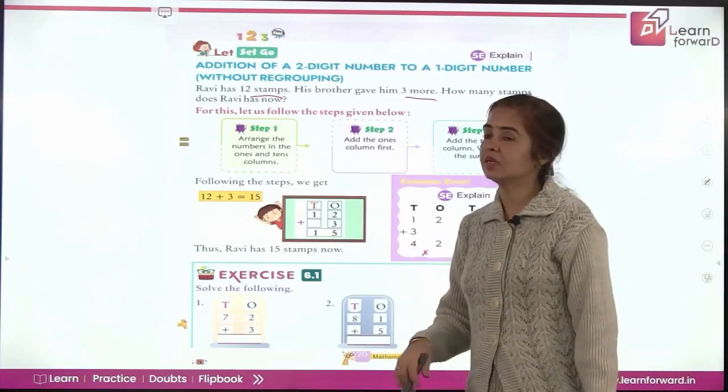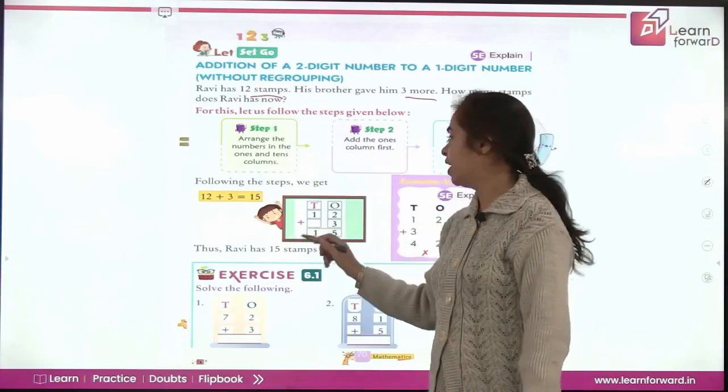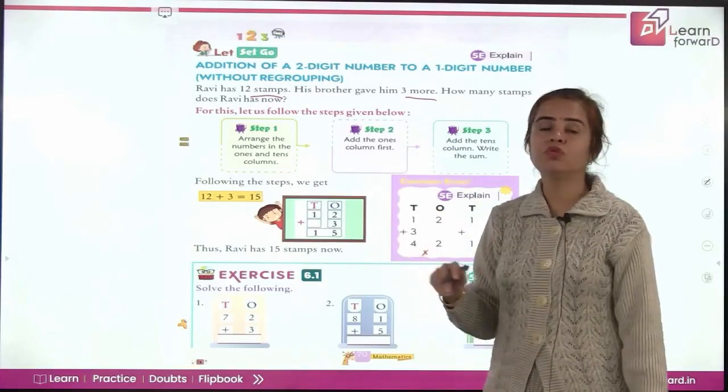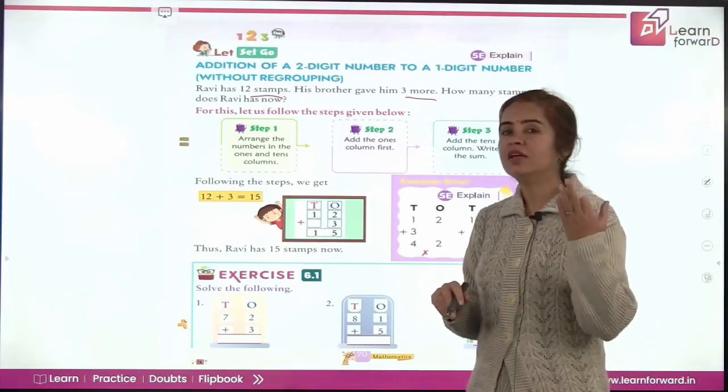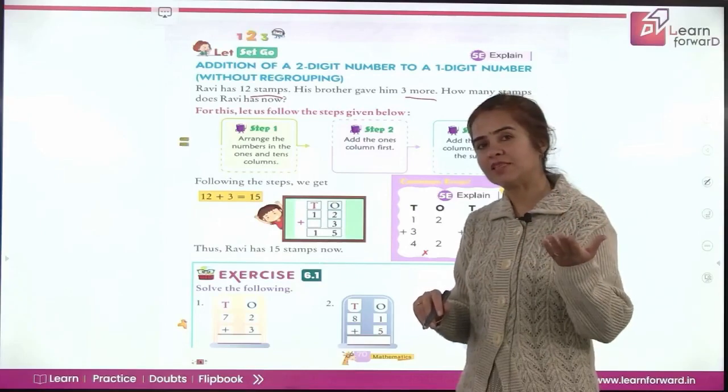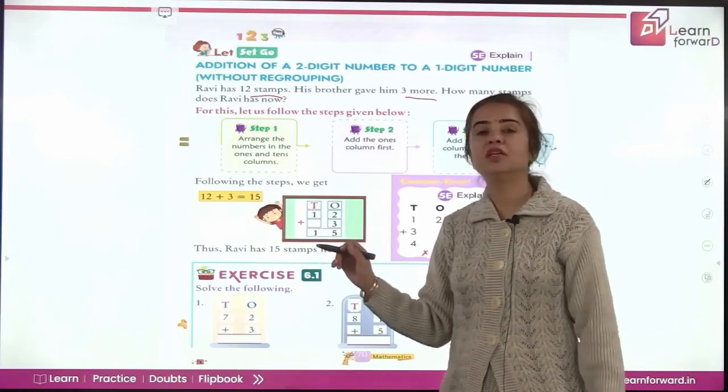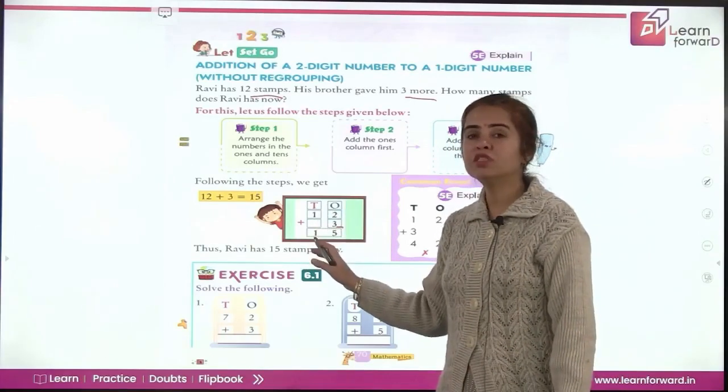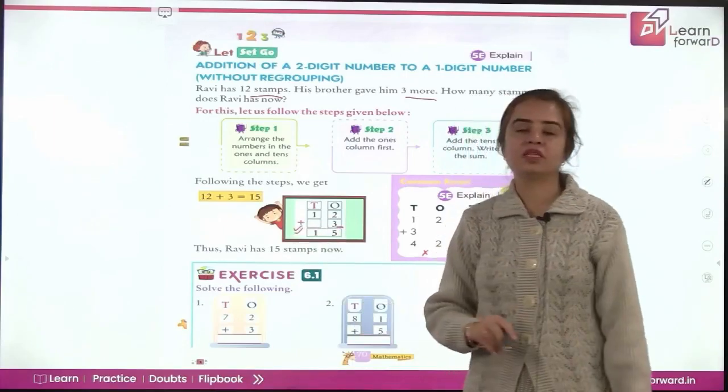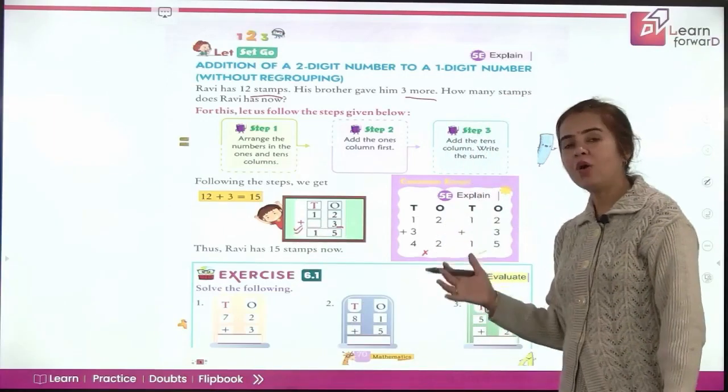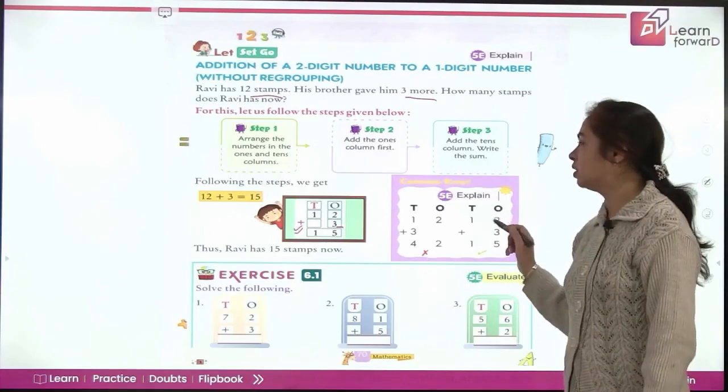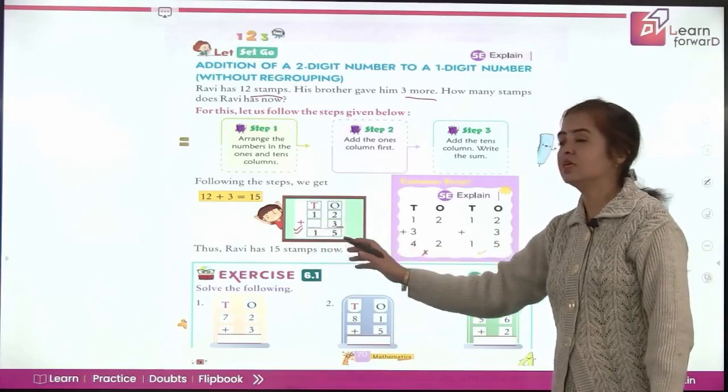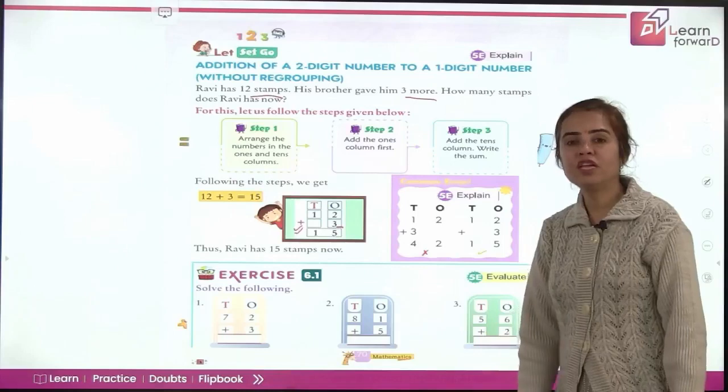For that what you will remember is first we will write down tens and ones, the two places here. Then pick up the first number 12. Write down the digits carefully at their proper places. Then three more. So what do you have to add? Three. Where will you write three? Ones place or tens place? Ones place because three means just three ones. So you will write three here. We will leave the tens box blank and because we are adding we will definitely put a plus sign here to show that we are adding numbers. Now always remember addition starts from the ones place. So three plus two is five and one is here. That means Ravi has 15 stamps now.